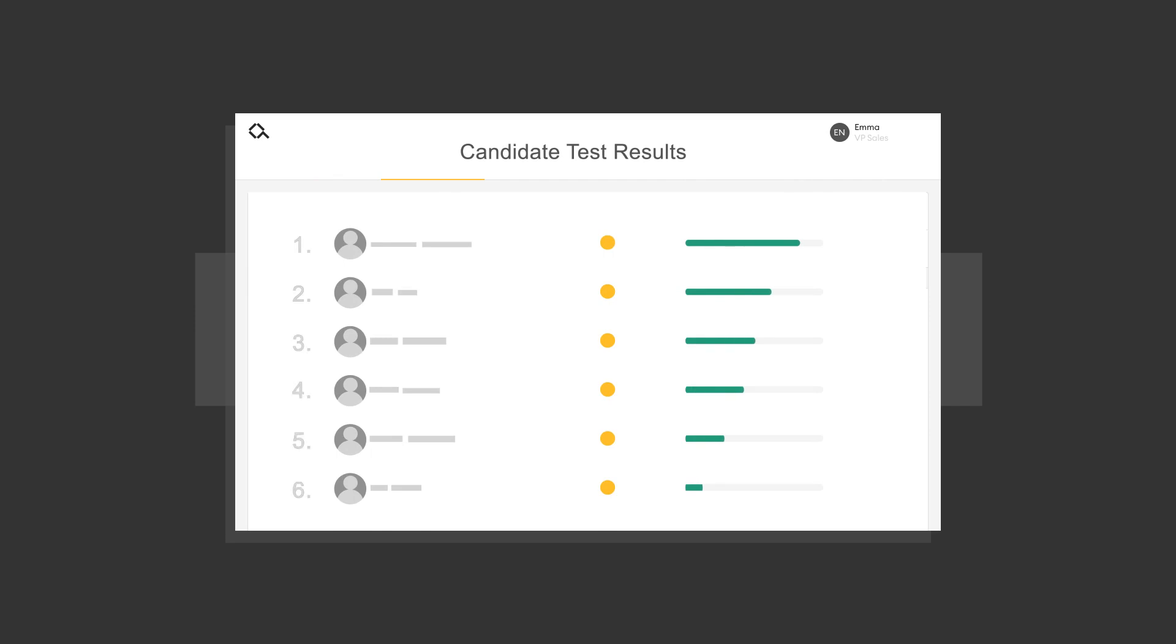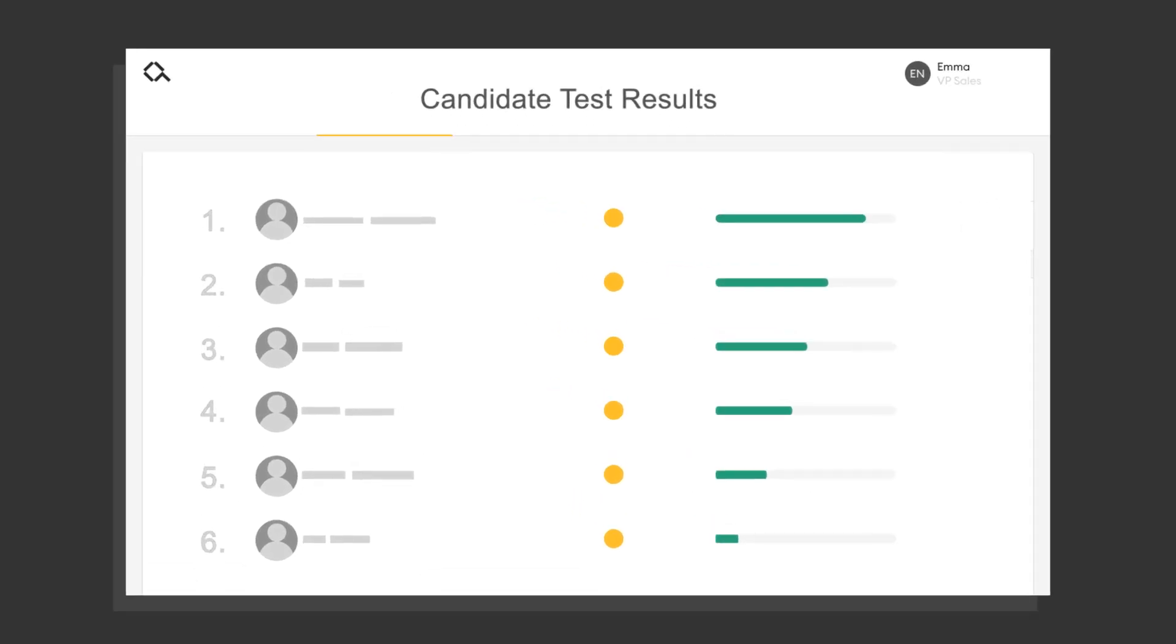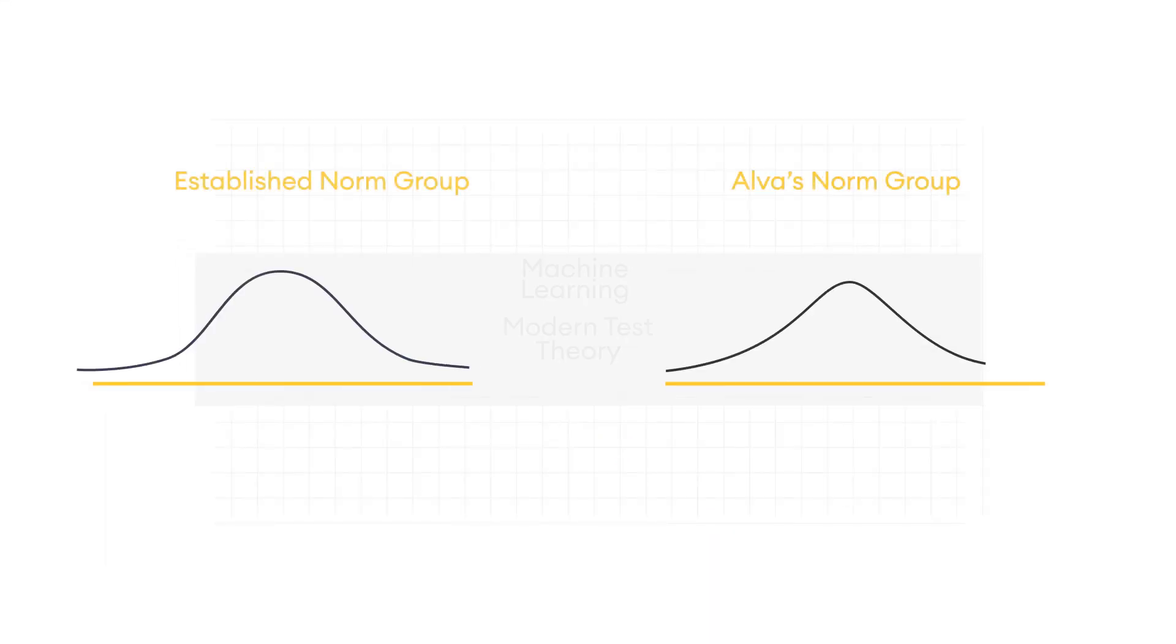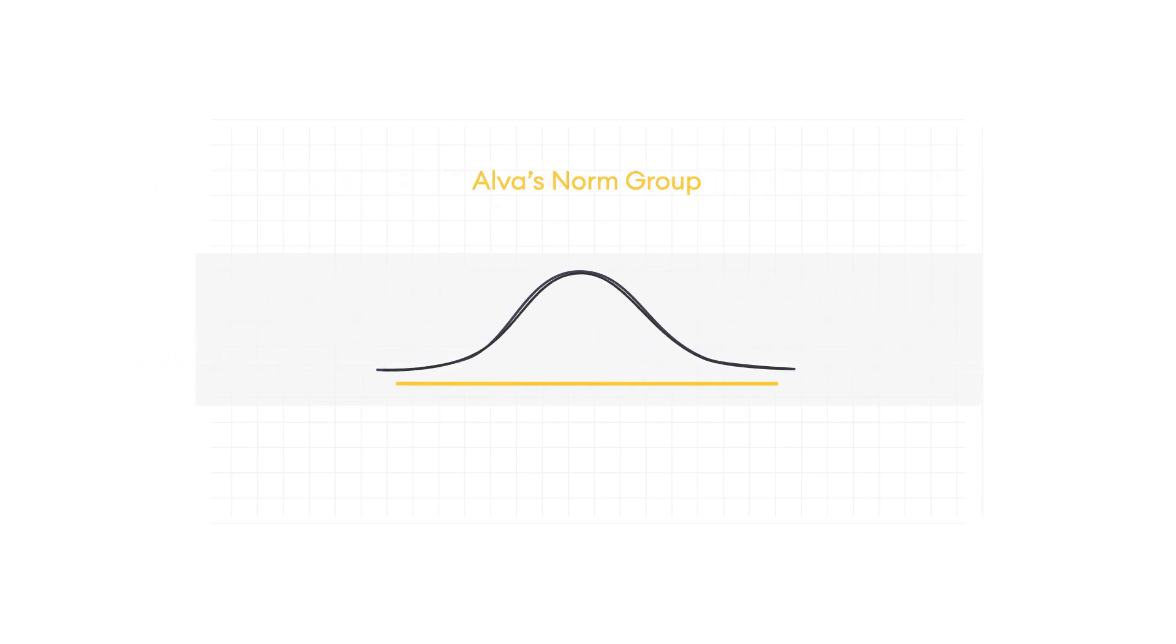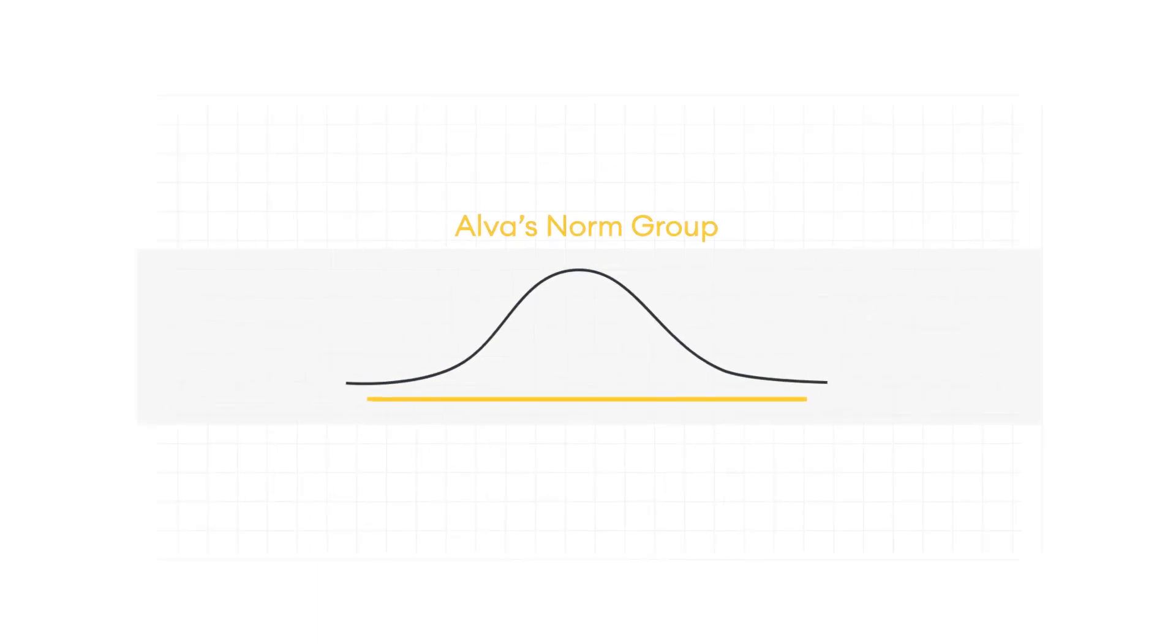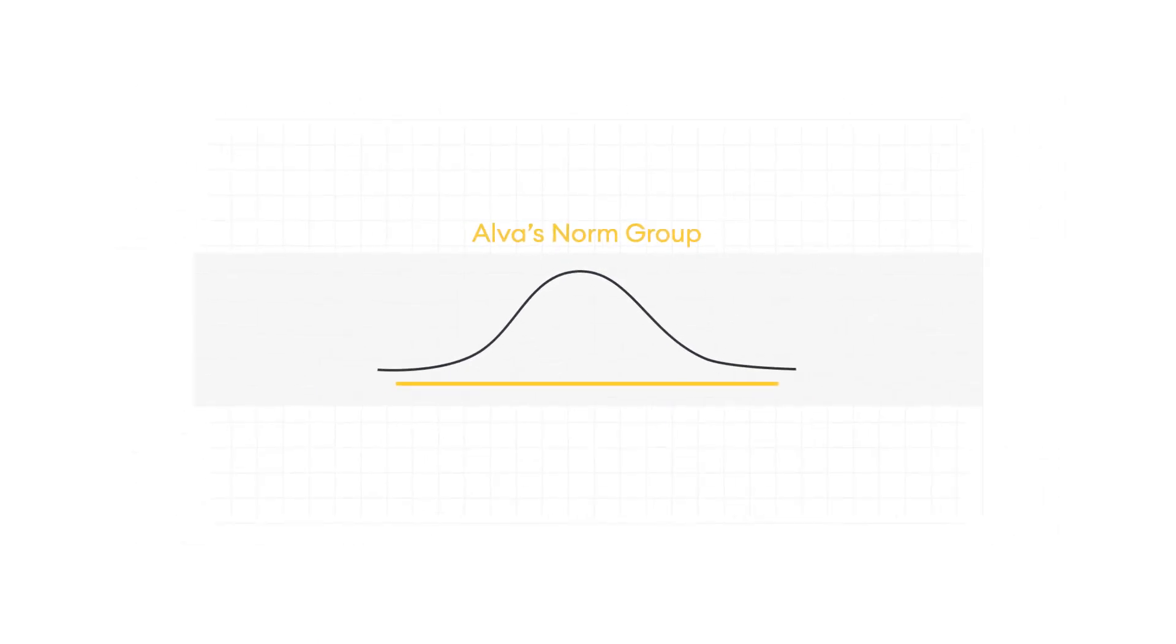Through machine learning and modern test theory, Alva has been able to bridge the results of these established norm groups and calibrate the scores on our own tests. Simply put, this means Alva's tests are just as accurate from the get-go.